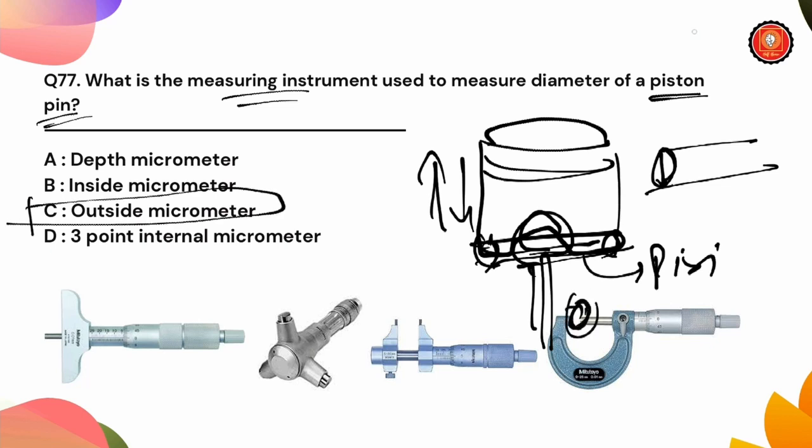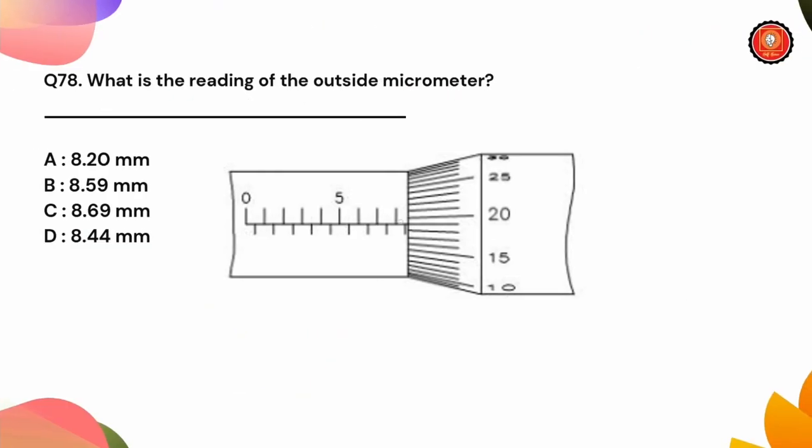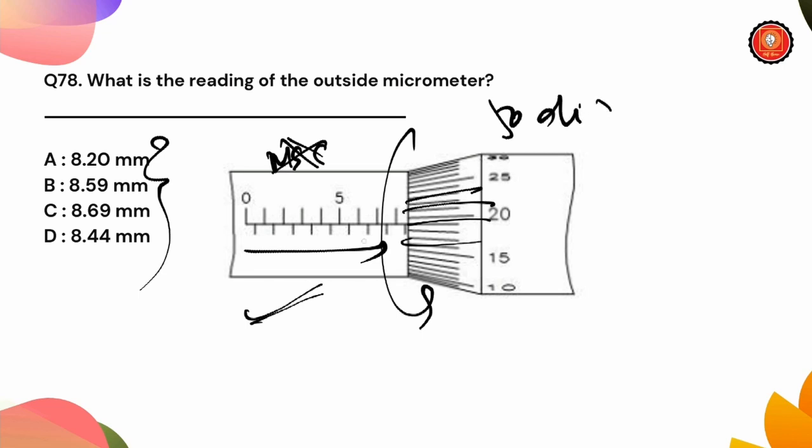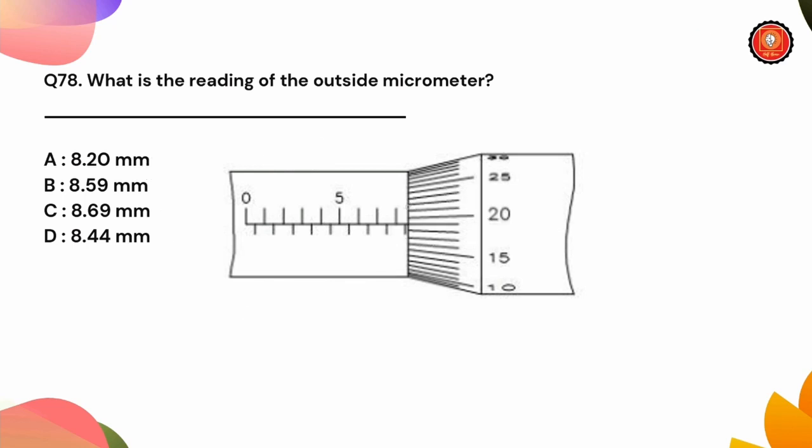Next question is what is the reading of the outside micrometer? We have options for the outside micrometer reading. So we can know that the micrometer reading - first check the main scale reading. Here is 0.5, 1, 1.5, 2, 4, 5, 8.